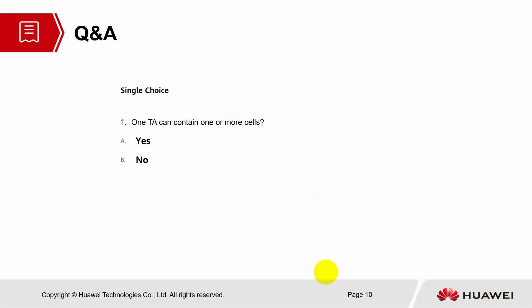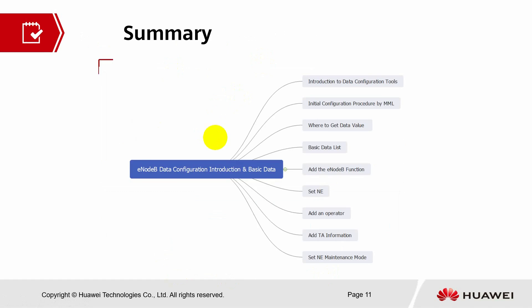Q&A session: One tracking area can contain one or more cells — the answer is yes. To summarize this section on eNodeB data configuration introduction and basic data, we discussed the introduction to data configuration tools, initial configuration procedure by MML, where to get data values, the basic data list, how to add the eNodeB function, how to set NE, how to add an operator, how to add tracking area information, and how to set NE maintenance mode. Hope you enjoyed the session. That's all from me, thank you, bye.